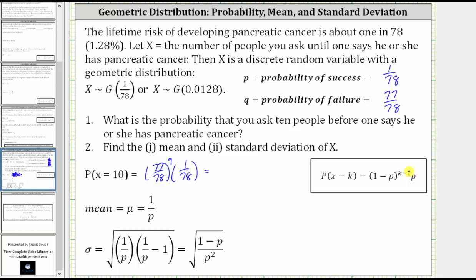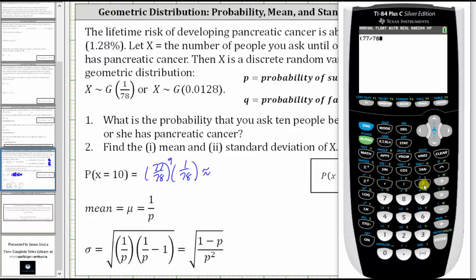And now let's go to the calculator and get a decimal approximation for this probability. To four decimal places, we have approximately 0.0114.